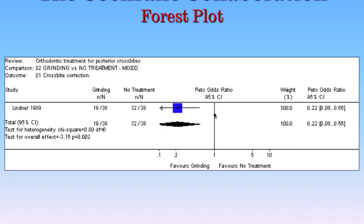You end up with an odds ratio here. If there was no difference between the two groups, you would end up with an odds ratio of one — that's why this line is highlighted here. An odds ratio of one means there would be no difference in the proportion of the outcome you're interested in. But you can see that the odds ratio is much lower than one. About half of those who received the grinding intervention did not go on to have a crossbite in the permanent dentition, whereas only six individuals in the control group avoided the outcome. So the odds ratio suggests that grinding does lead to a reduction of posterior crossbites in the permanent dentition.